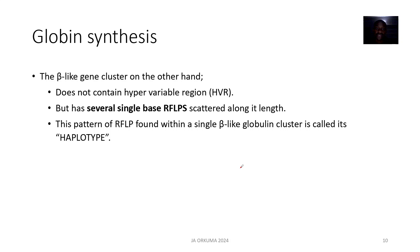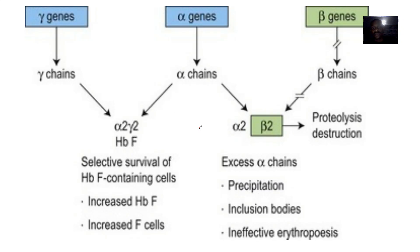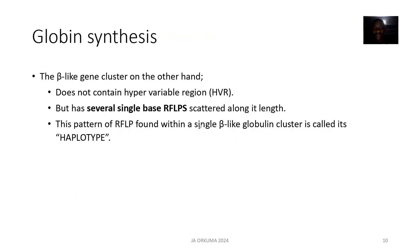The beta-like gene cluster, on the other hand, does not contain hypervariable regions, but has several single-base restriction fragment-length polymorphisms scattered along its length.